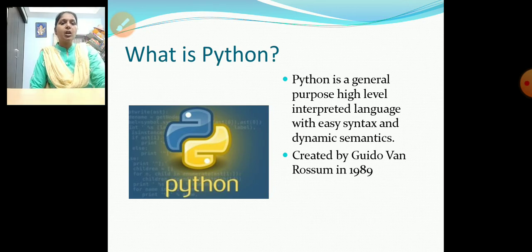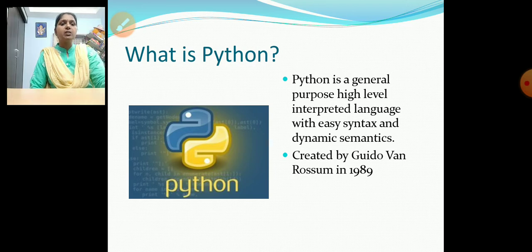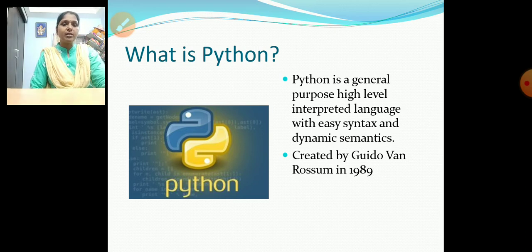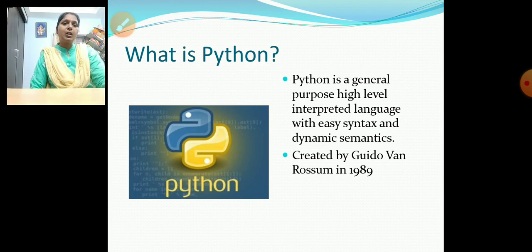What is Python? Python is a general purpose, high level, interpreted language with easy syntax and dynamic semantics. It was created by Guido van Rossum. He started this language as fun because he wanted to make a language which is easy to read. He used indentations instead of curly brackets, which we used in languages like C, C++, and Java. He started developing this but didn't receive popularity because it was slow compared to other programming languages.